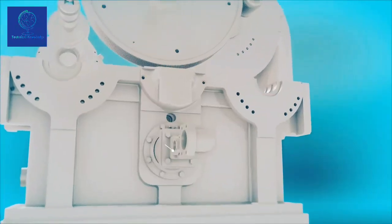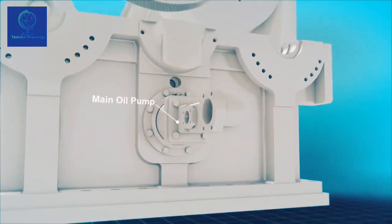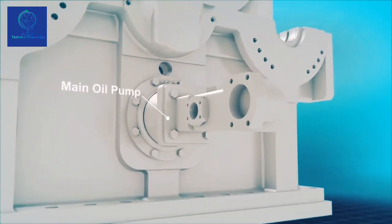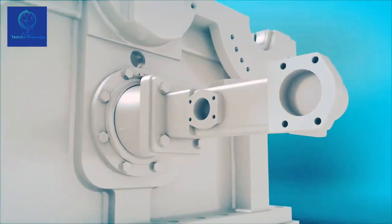Compressor bearings and gears are lubricated by the main lube oil pump, which is driven through the bull gear for reliable oil flow.